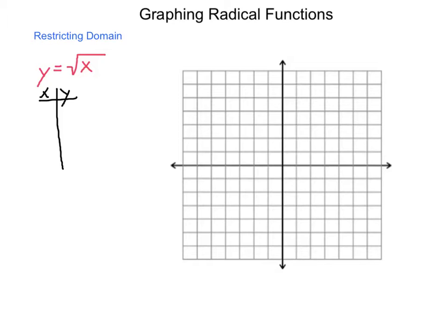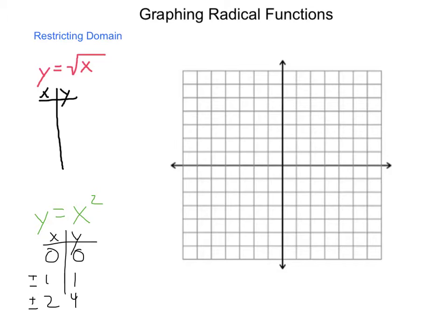We're going to get to the point where we graph y equals the square root of x, but the parent graph that this comes from is y equals x squared. In order to build y equals x squared, we need a table of values. Standard x-y: 0,0; 1,1; 2,4. But this graph is symmetric about the y-axis, so it's actually plus or minus 1 and plus or minus 2. Putting these points on our graph, we have our point at the origin, 1,1 and negative 1,1; 2,4 and negative 2,4. Connecting the lines gives us the standard quadratic.